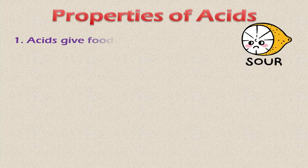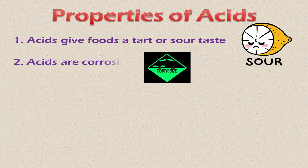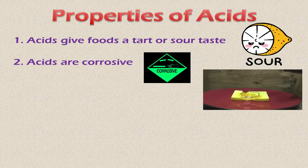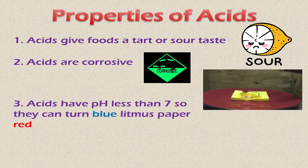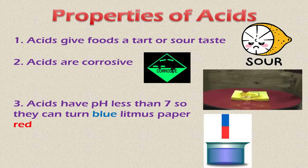Now we'll discuss some properties of acids. First, acids give foods a tart or sour taste. Acids are corrosive in nature, meaning they can burn your hand, so they are very dangerous — do not touch any acid. Acids have a pH value less than seven, so they can turn any blue litmus paper red.